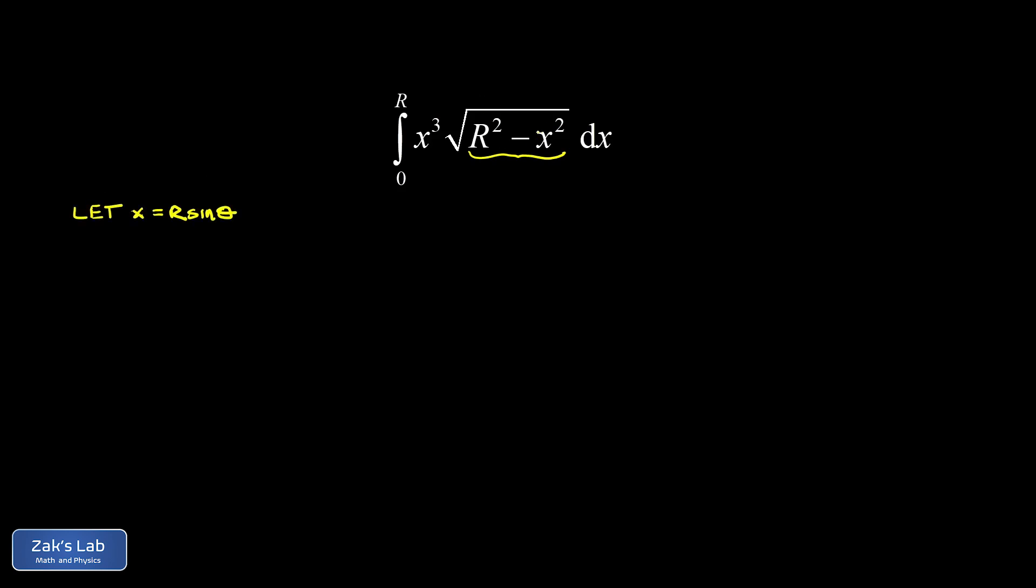And the whole point of that substitution is that then inside the square root, we'll have r squared minus r squared sine squared theta. And when we factor the r squared out of that, we get 1 minus sine squared theta, which is cosine squared theta.